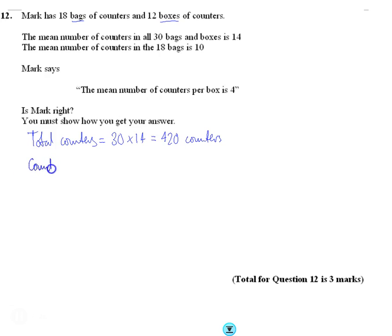We can work out the counters in the bags because we talked about the bags here. So the counters in the bags, similar calculation. The average number was 10 in the 18 bags, so we know there was 180 counters in bags.